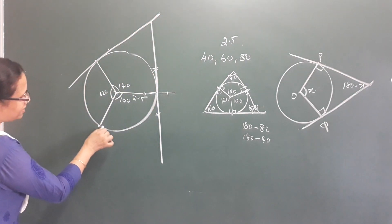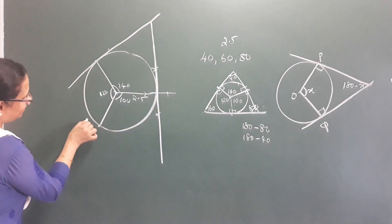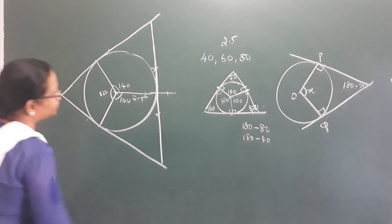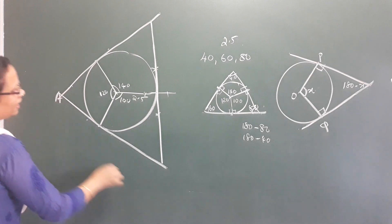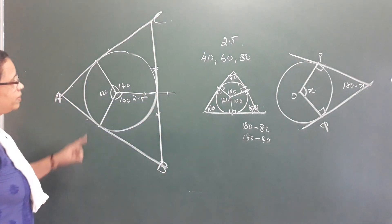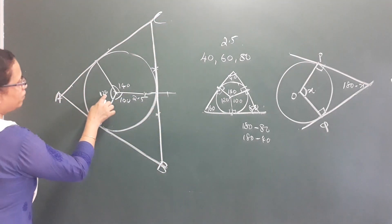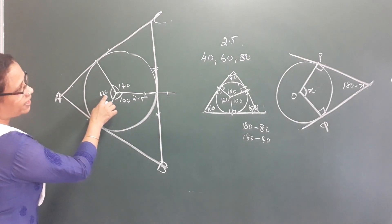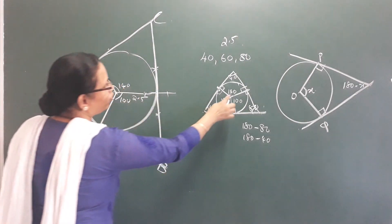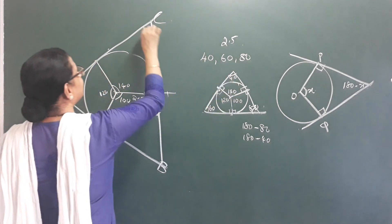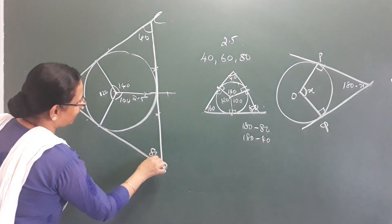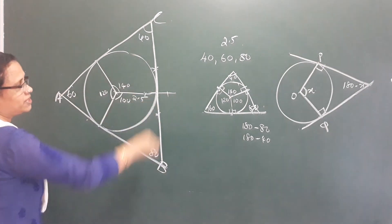We have the tangents in the triangle. Here is A, B, C. This triangle has measures. If this is 120, it is 120 — then here is 60. If this is 140, it is 40. This is 80, then here is 80. This is the triangle.